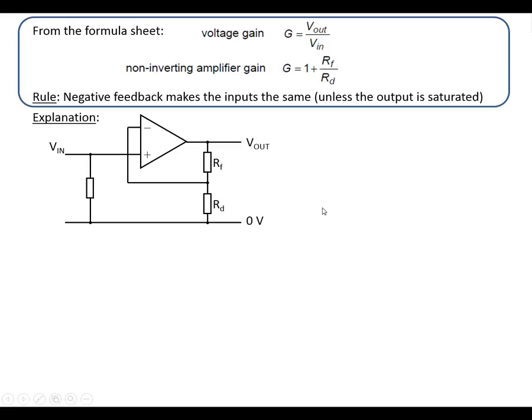So let's go through an example, a worked example to work out how this works. Let's say we've got 2 volts going into the non-inverting input. Negative feedback is going to make the inputs the same, which means that the inverting input is also going to be 2 volts. So we've got 2 volts at this point in the circuit.